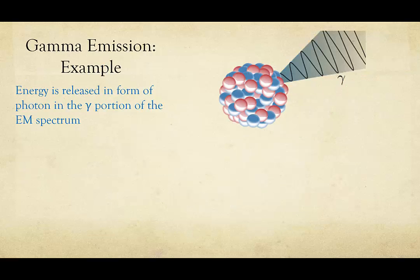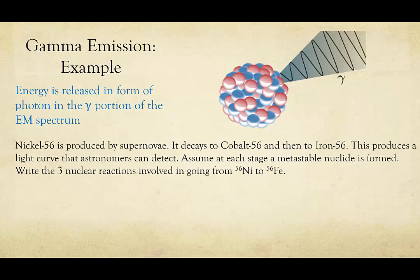Let's do an example. Nickel-56 is produced by supernovae. It decays to cobalt-56 and then to iron-56. This produces a light curve that astronomers can detect. Assuming that at each stage a metastable nuclei is formed, write three nuclear equations involving going from nickel-56 to iron-56.